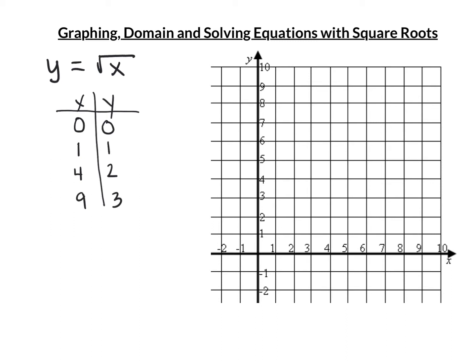When we graph these points — (0,0), (1,1), (4,2), (9,3) — we can see the general shape of the graph. Keep in mind there are numbers between all of these, decimals, that when I take the square root I get a decimal. These values give us a good picture of what the graph would look like.